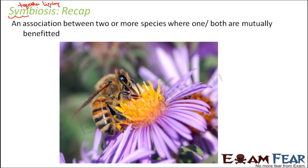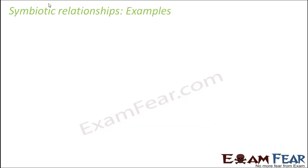For example, on the screen you can see a honeybee and a flower. The honeybee is benefited because it gets nectar from the flower — it is getting its food from the flower. And the flower is benefited because it is being pollinated by the honeybee. So both of them are mutually benefited, and that is why this association is known as symbiosis.